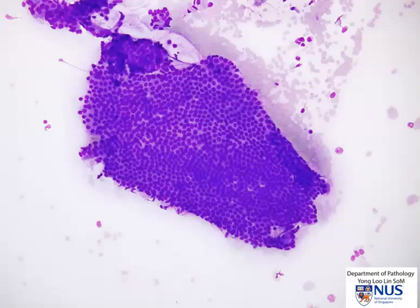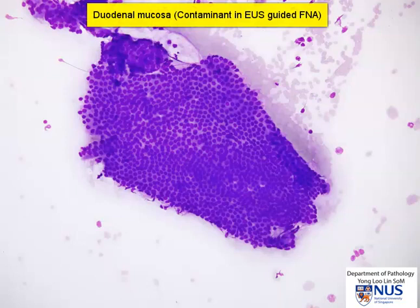Hello, here is an example of normal contaminant duodenal mucosa seen in an EUS-guided FNA, endoscopic ultrasound-guided FNA. Usually when there is a lesion in the head of the pancreas, the needle will traverse the duodenal wall in order to reach its target and sometimes may pick up some duodenal epithelium.